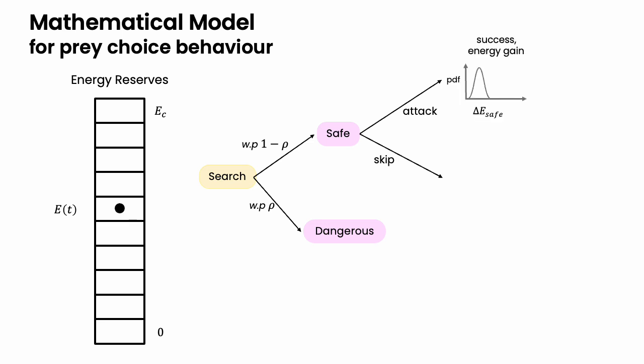If it chooses to attack the safe prey, it always gets a small but certain gain in energy. If it chooses to skip the prey, it pays a metabolic cost and loses some energy. And similarly for the dangerous prey.